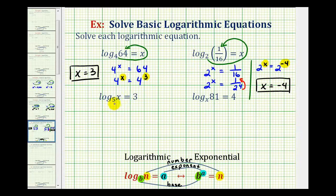Now we have log base 5 of x equals 3. So the base is 5, the exponent is 3, and the number is x.